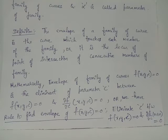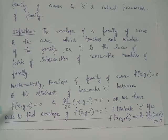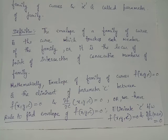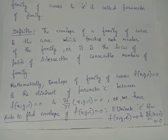Now let us discuss the method to find the envelope of a family of curves f(x, y, c) = 0 or f(x, y, α) = 0, where c or α is the parameter. We find the first-order partial derivative of f with respect to the parameter, giving ∂f/∂c = 0. Eliminating the parameter c between f(x, y, c) = 0 and ∂f/∂c = 0 gives the desired envelope of the family of curves.